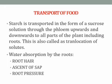Regarding the transport of food: during photosynthesis, plants synthesize food in the form of glucose, which is stored in the form of starch. This starch is further transported in the form of sucrose solution through the phloem — upwards and downwards — to all parts of the plant including roots. This process is called translocation of solutes.